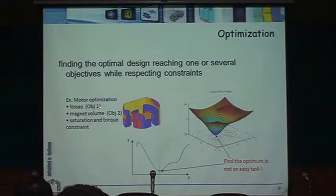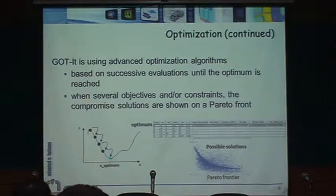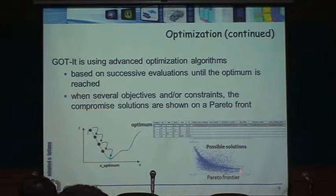Here I'm doing an optimization of losses — the objective is to minimize losses and magnet volume, with a saturation constraint on the torque. I can find the variation and then find the optimum. When I have more than one parameter — for example losses and torque — I have two objective functions. I need to find the combination between those objectives, which is done using a Pareto front or Pareto frontier.